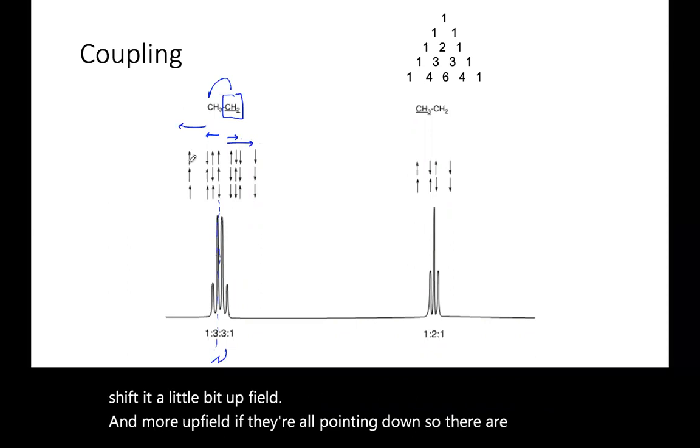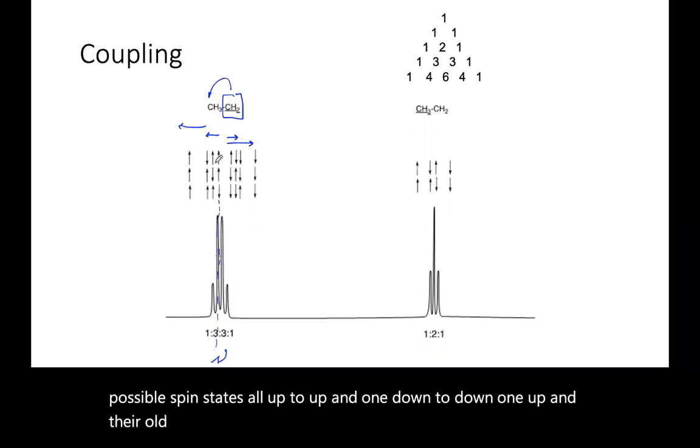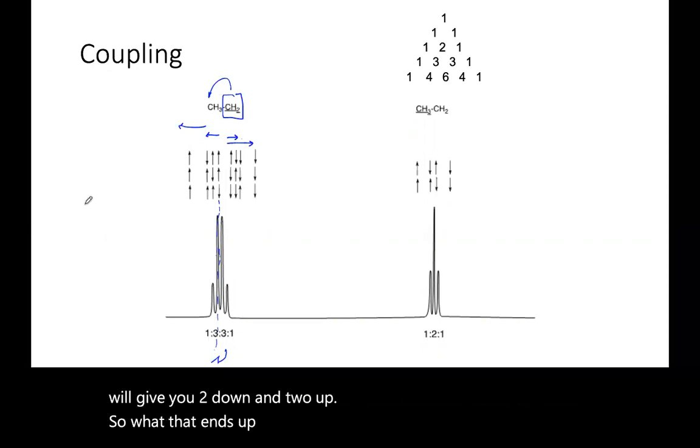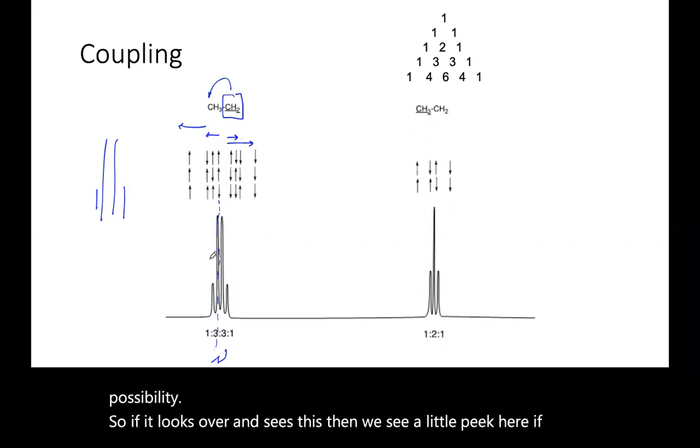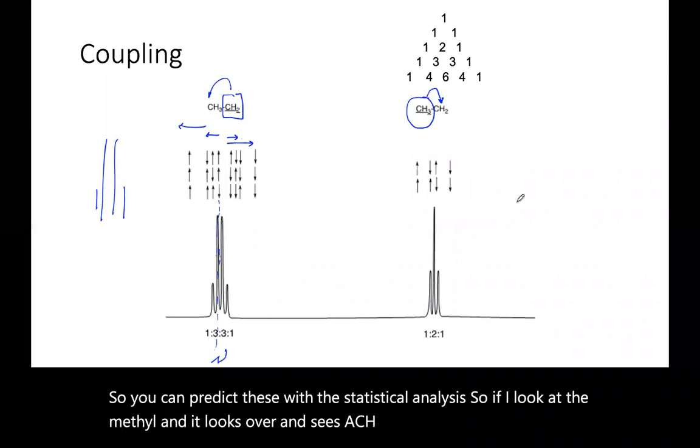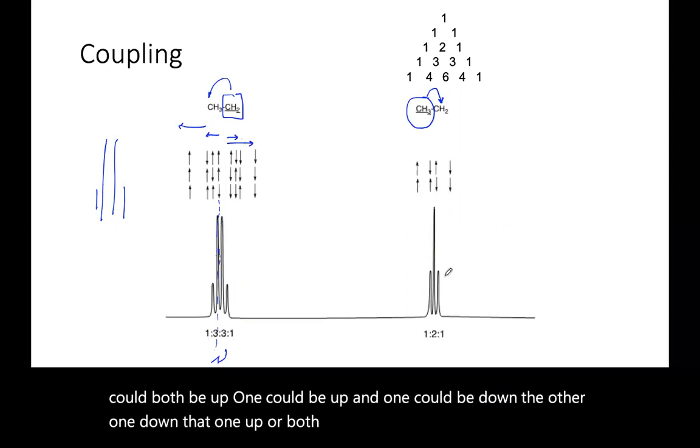So there are four possible spin states: all up, two up and one down, two down one up, and all down. In reality, there's three possible combinations that will give you two up and one down, and three that will give you two down and one up. So what that ends up being is a one to three to three to one possibility. You can predict these with statistical analysis. If I look at the methyl, and it looks over and sees a CH2, we would predict that it could both be up, one could be up and one could be down, the other one down, that one up, or both down. And so that's a one to two to one ratio.